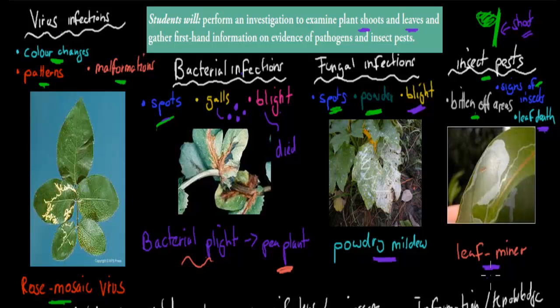An example of an insect infestation is the leaf miner. This is actually a larva from a butterfly — a little baby butterfly before it pops out of its cocoon — and it will be inside an actual leaf. You can see here it's inside the leaf. What it will do is basically eat the inside of the leaf, which is why you can see all of this area is hollow — there's nothing inside. Which is why they're called leaf miners: they're basically mining the leaf, eating the inside of it. That's one giveaway that there might be an insect infestation.